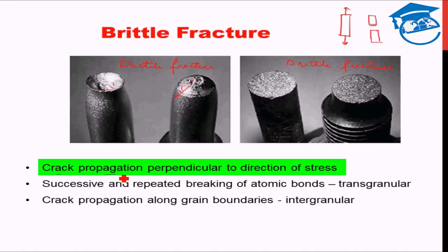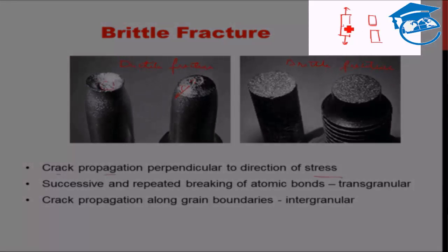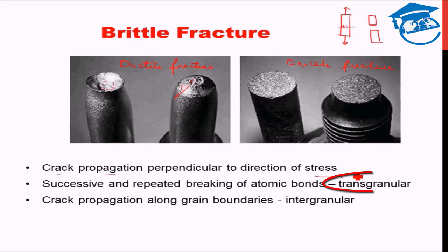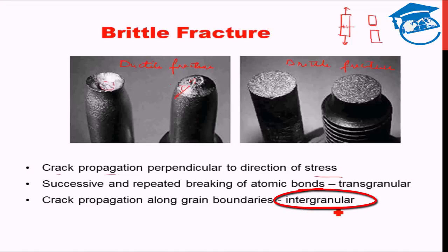The crack propagation in brittle fracture is perpendicular to the direction of stress. In brittle fracture, there is successive breaking of bonds — bonds start to rupture and keep breaking until the whole fracture occurs. This is known as transgranular fracture, meaning through the grains. Alternatively, crack propagation can also occur along the grain boundaries; in that case it will not propagate through the grains but along them, and that type of brittle fracture is known as intergranular fracture.